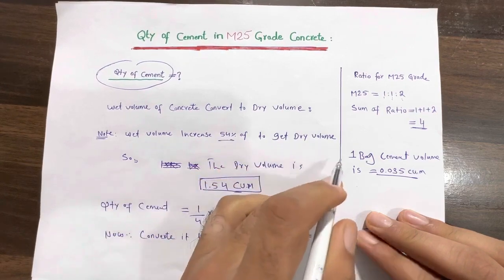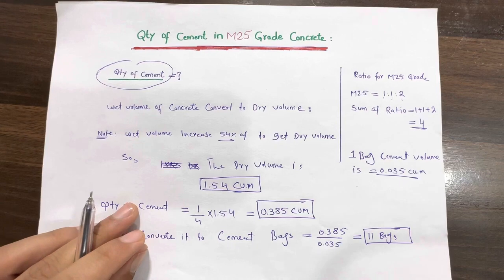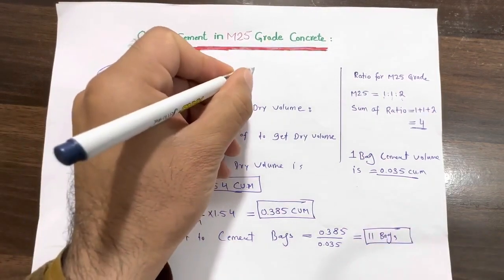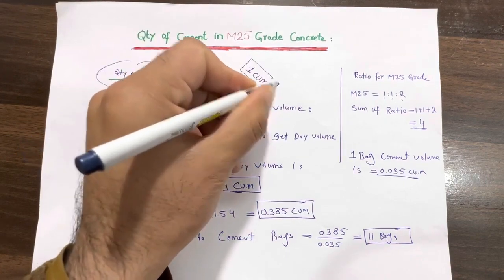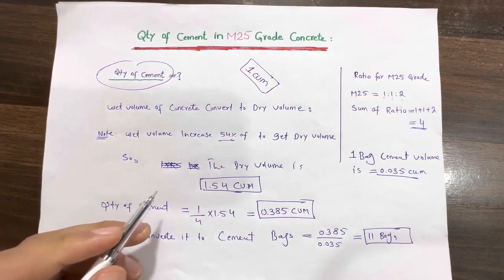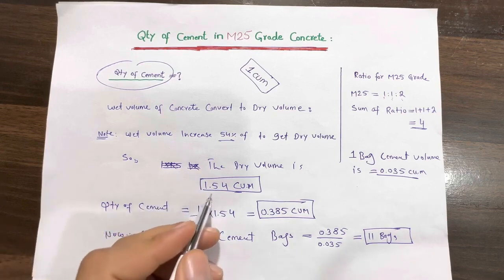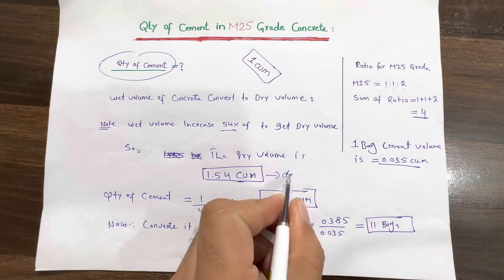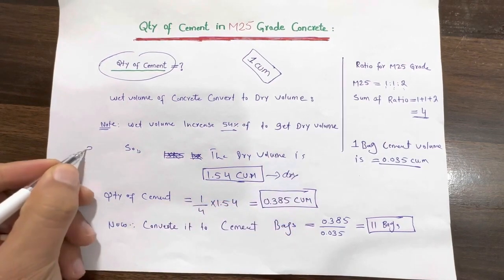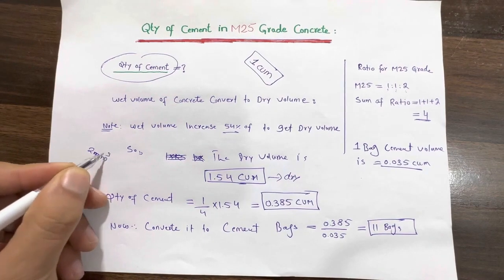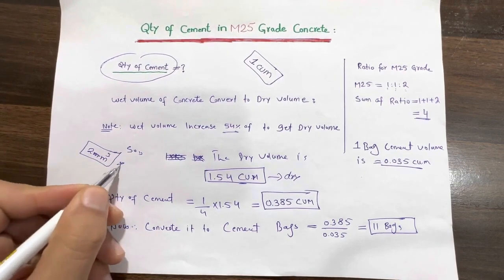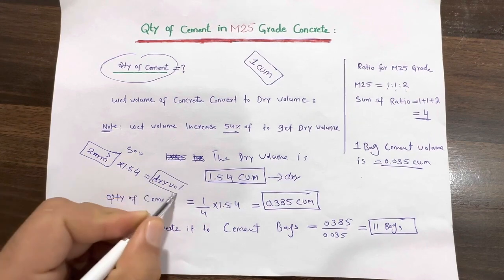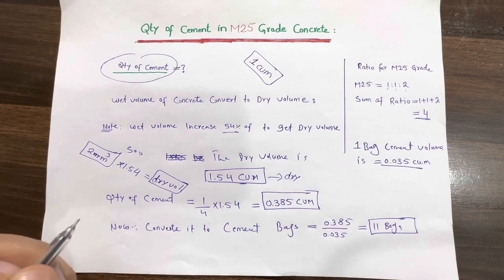Wet volume is increased by 54% to get dry volume for materials such as cement, sand, or aggregate. Therefore the dry volume factor is 1.54. We are finding the quantity of cement for 1 cubic meter, so 1 cubic meter is multiplied by 1.54. If you have 1 cubic meter or 2 cubic meters as wet volume, you multiply by 1.54 to get dry volume. If you don't find the dry volume before calculating the quantity of materials, the result will be wrong and you will waste a lot of material in building construction.